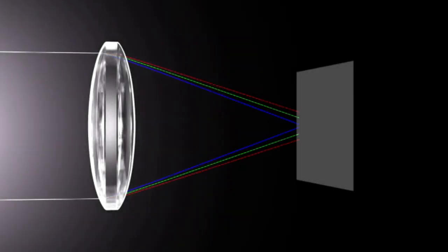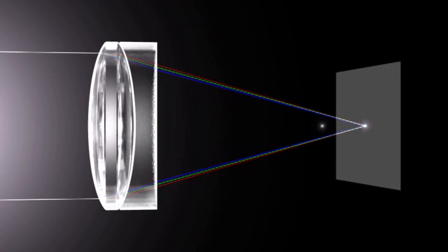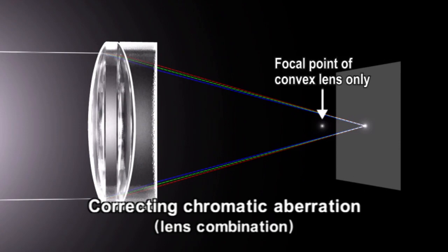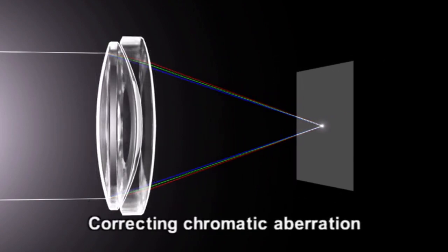Chromatic aberration can also be corrected by combining convex and concave lenses. Moreover, by joining lenses made of different materials, it is even possible to correct chromatic aberration without changing the position of the focal point.